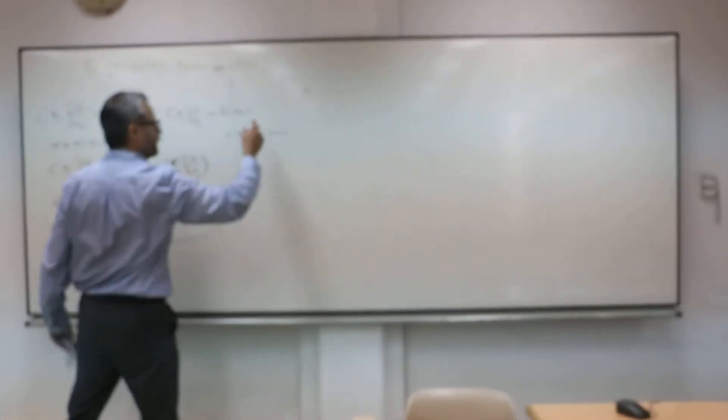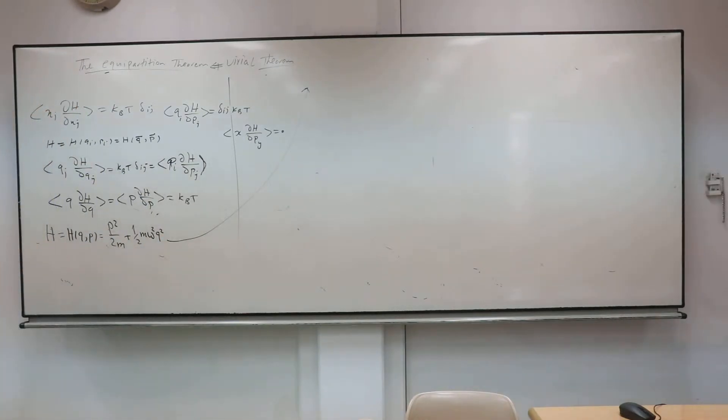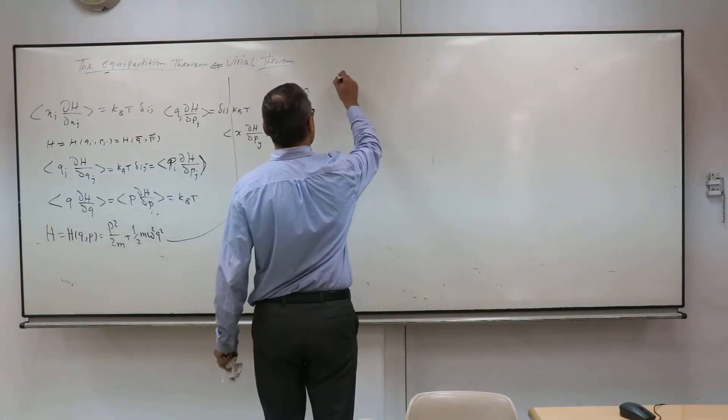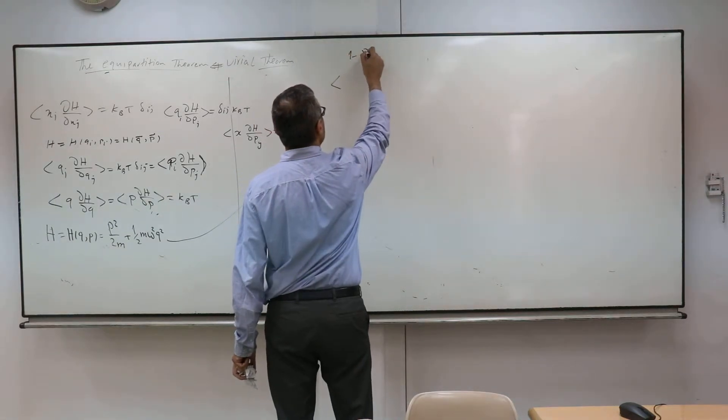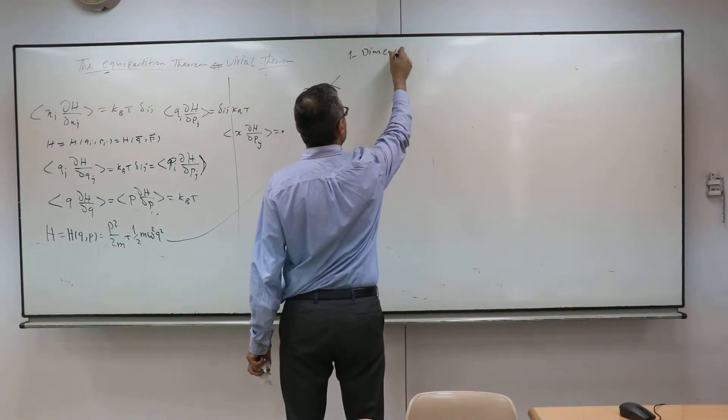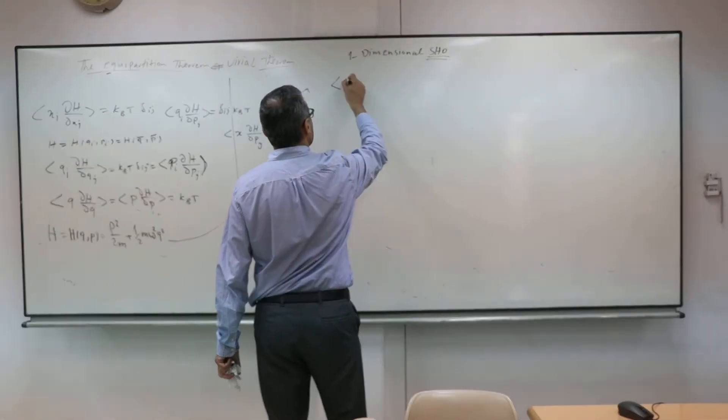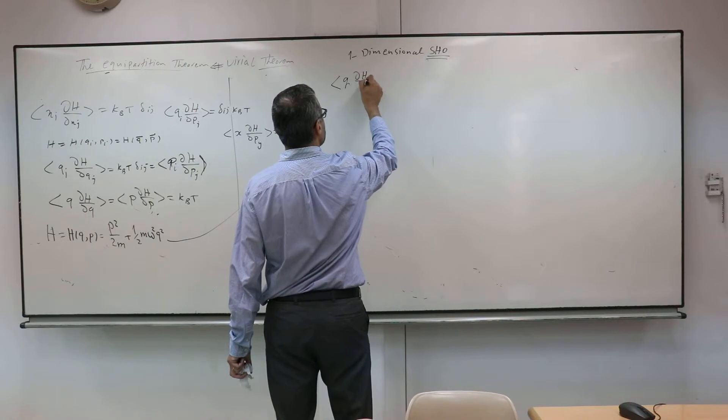Harmonic oscillator is the example which this theorem worked for very well, but this is a simple P over M squared plus one half. The model is very useful to describe a wide range of phenomena. I want to use this theorem here. And this is one-dimensional, I have a one-dimensional single harmonic oscillator. Let me write what this will be.